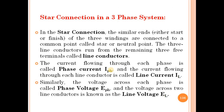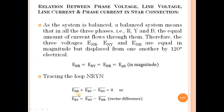We discussed the star connection in a three-phase system, where we defined the phase current, line current, phase voltage, and line voltage, and the relations between all of them — that is, phase voltage, line voltage, line current, and phase current.